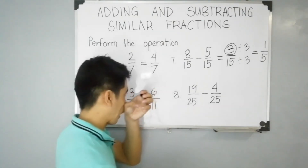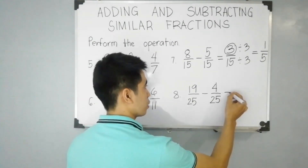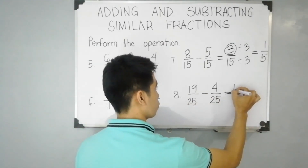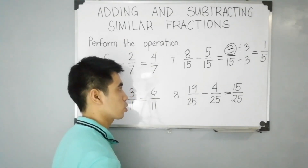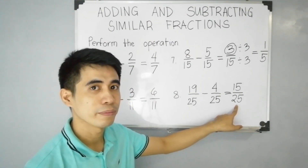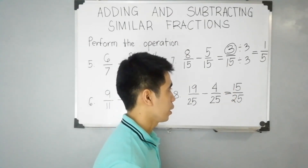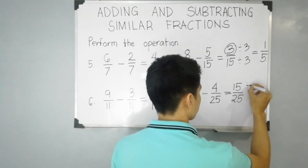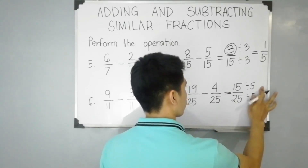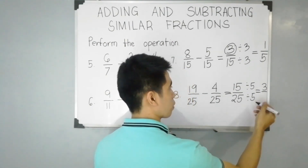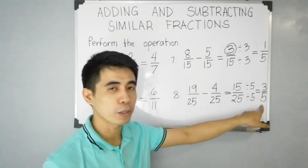For item number 8: 19 over 25 minus 4 over 25. Same process — subtract the numerators. 19 minus 4 is equal to 15 over 25. Copy the denominator since they have the same denominators. Since 25 and 15 are both divisible by 5, let us divide the numerator and denominator by 5. 15 divided by 5 is 3, and 25 divided by 5 is 5. Our final answer is 3 over 5, since 3 and 5 do not have any common factor aside from 1.